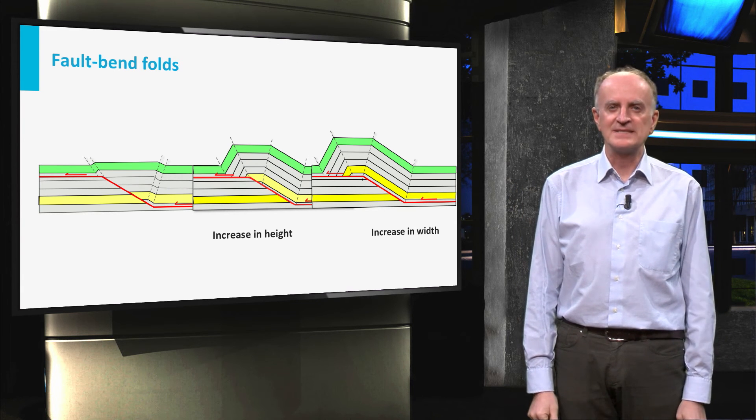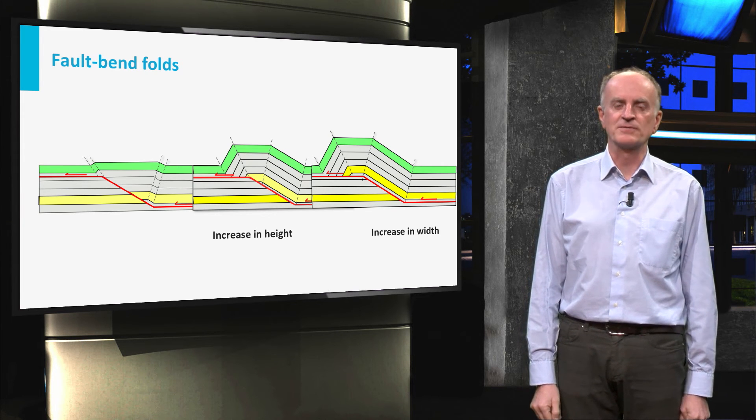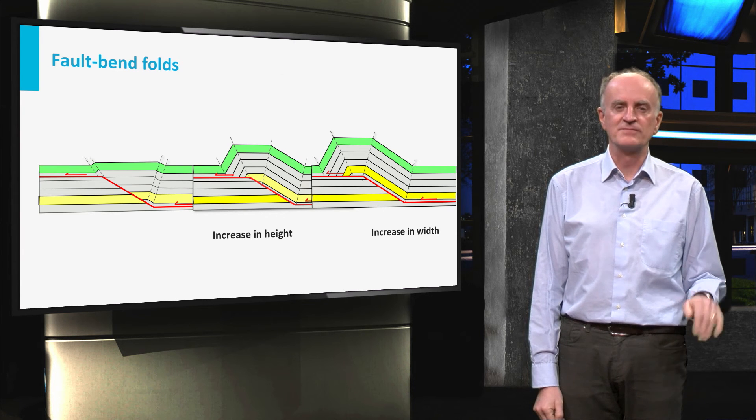As you can see from the slides, the geometry of the passive folds is controlled by the geometry of the thrust surface. Indeed, something very different from what we've seen for buckle folds.